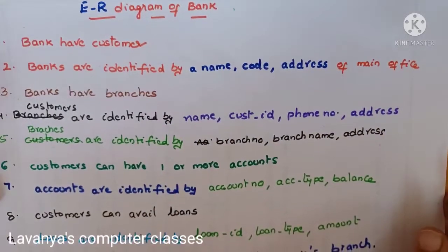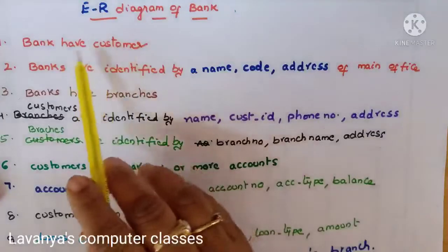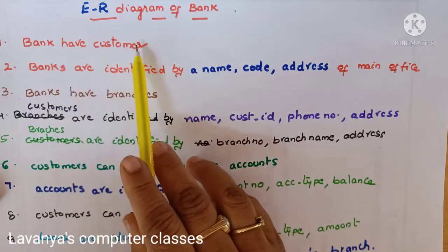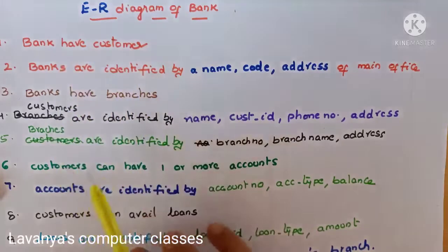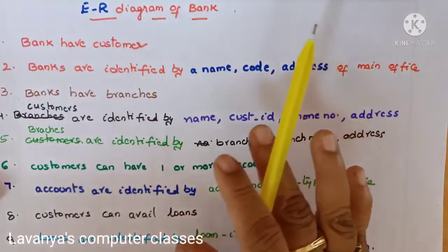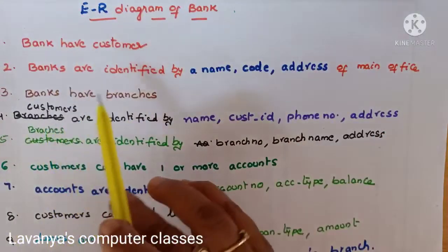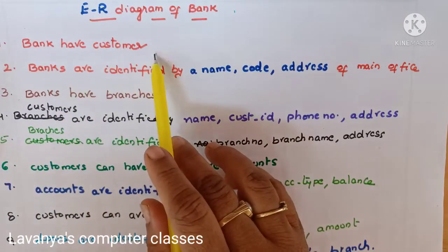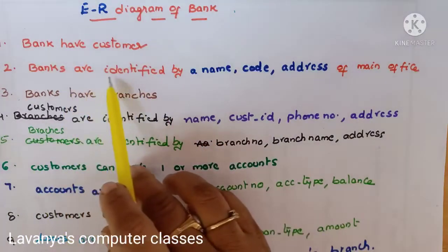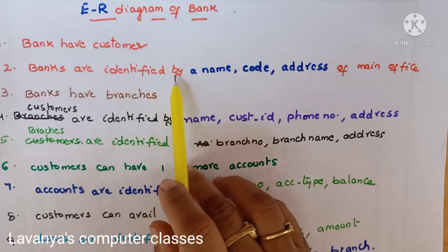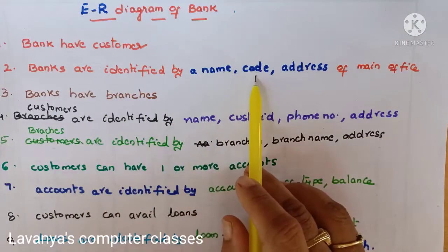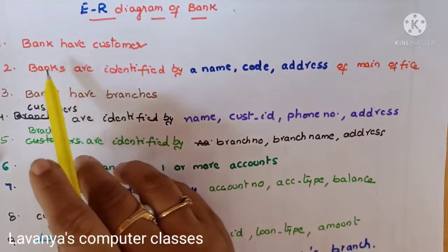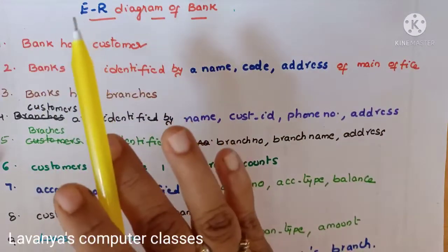This is the bank example. They are giving some description. First, any bank has customers. Banks are identified by a name, code, and address of the main office. So this is the first thing to identify.